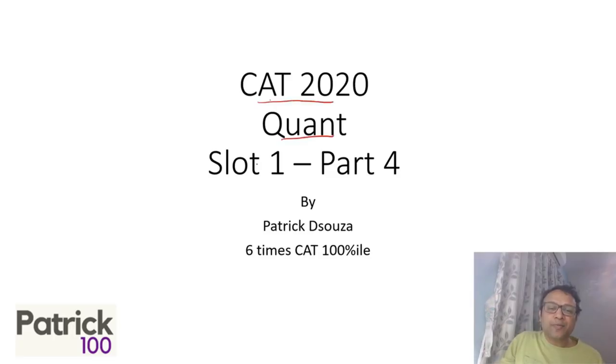In CAT 2020 Quant paper Slot 1, this is Part 4. We will take four questions and discuss time to solve. If you really want to crack the CAT paper, one way is to score really high in Quant. People who score really high overall are also the ones who score high in the Quant section.